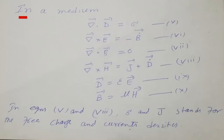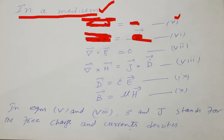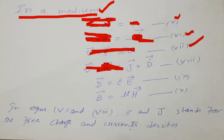In the case of a medium: the fifth equation is ∇·D = σ, where D is the displacement vector. The sixth is ∇×E = −∂B/∂t. The eighth equation is ∇×H = J + ∂D/∂t. The displacement vector D = εE, and H is the magnetic field strength.